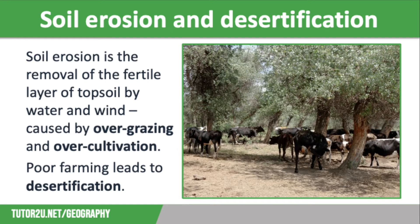The last impact of food insecurity we are going to look at is soil erosion and desertification. Soil erosion is the removal of the fertile layer of topsoil by wind and water. It is caused by the overgrazing and over-cultivation of land linked to poor farming practices. These poor farming practices occur because the most fertile land is used to grow cash crops for export, meaning that local people are left with marginal land without sufficient nutrients or water for their own food supply. This land is unable to produce high yields and is used extensively, meaning it never gets a chance to recover between harvests — which is over-cultivation.